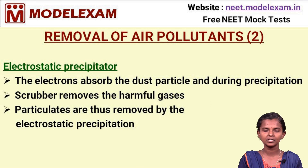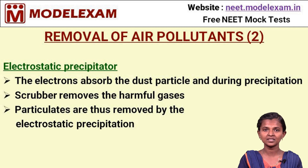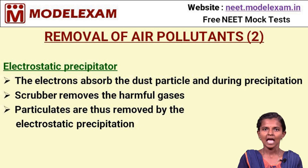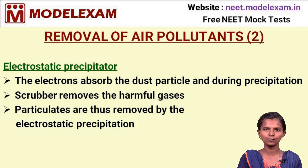Removal of Air Pollutants, Part 2. Here we see how electrons are used in the removal of particulate matter. The electrons absorb the dust particles present in the gases released from industries. During precipitation, the dust particles are released and precipitated, and the clean gases are then released. There is also another component called a scrubber, which is used in removing harmful gases. Thus, both particulates and harmful gases are removed from the gases released by industries. This is how the electrostatic precipitator works.